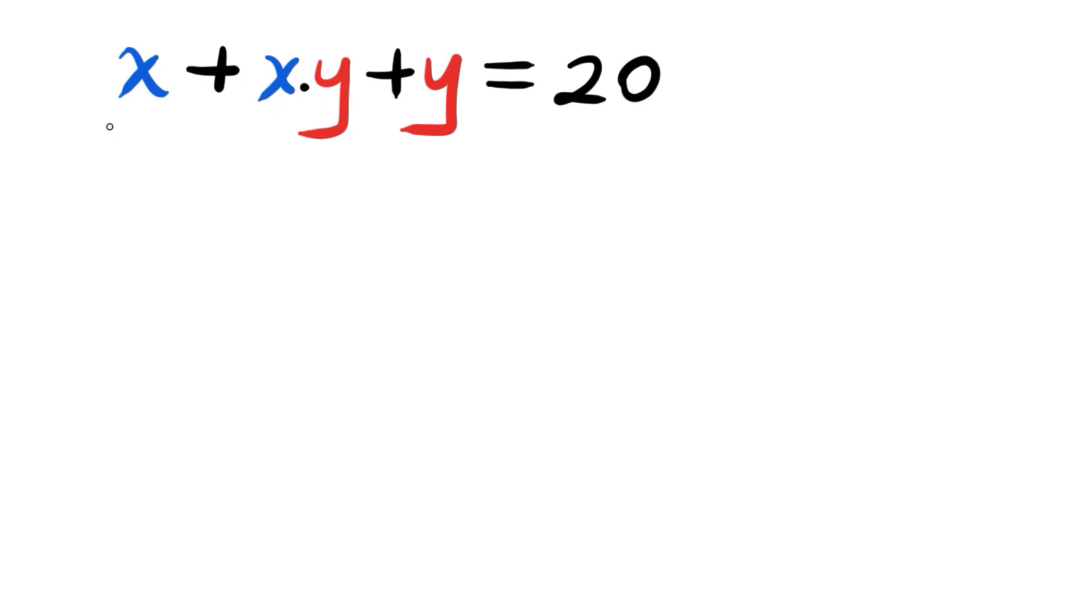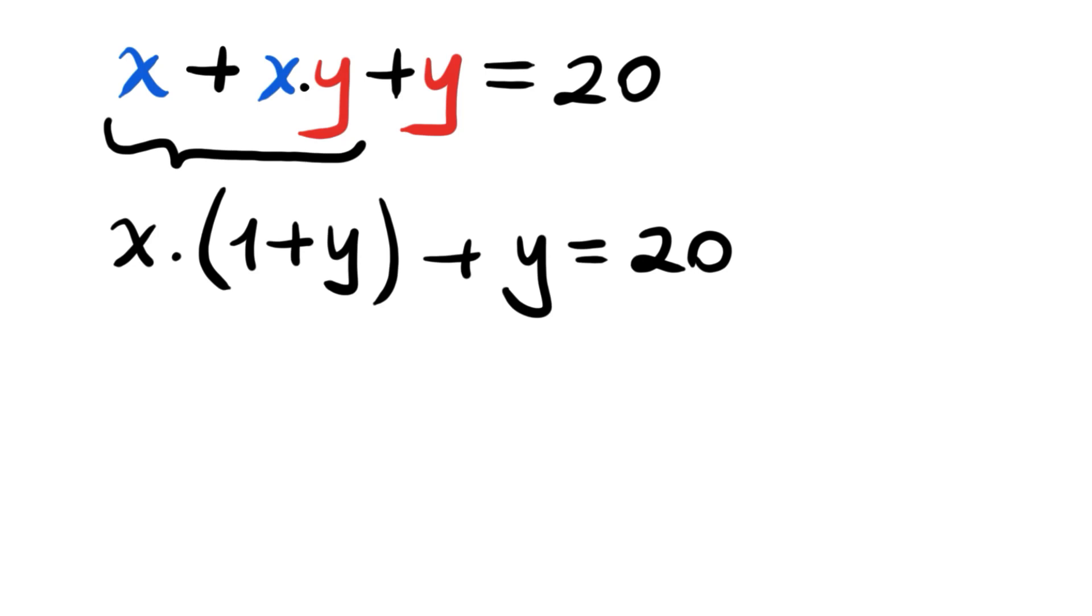Let's just group these two: X times 1 plus Y, plus Y is equal to 20. Now my friends, since we have 1 plus Y here, we will just have another one by adding 1 to both sides of the equation.